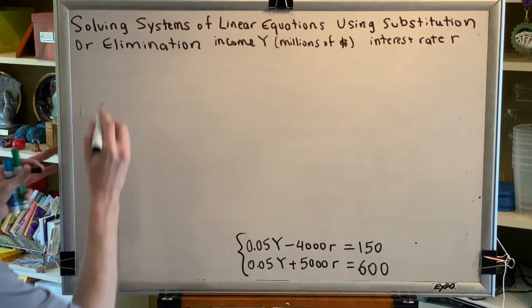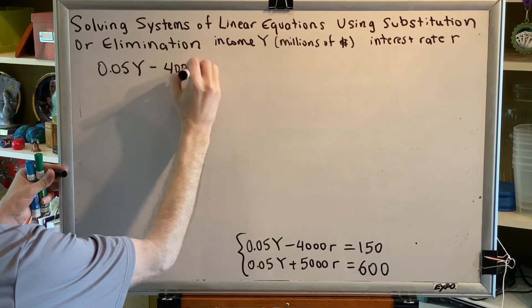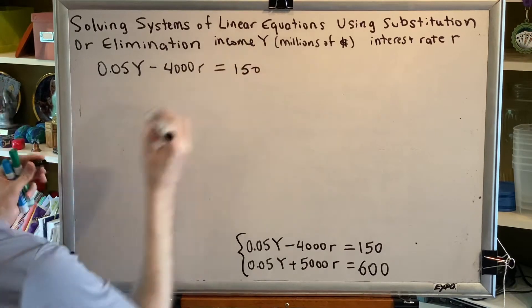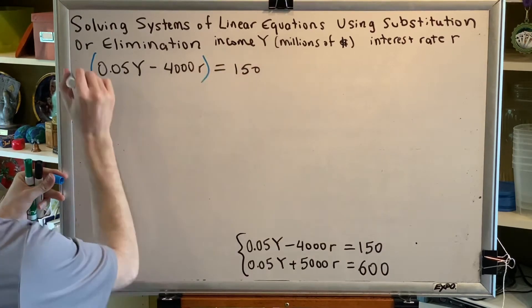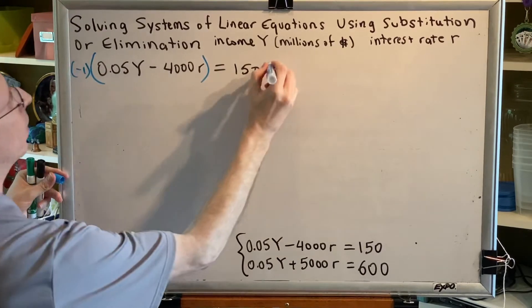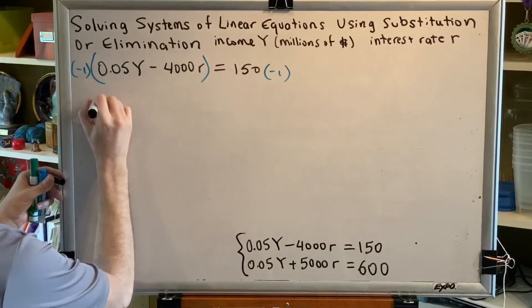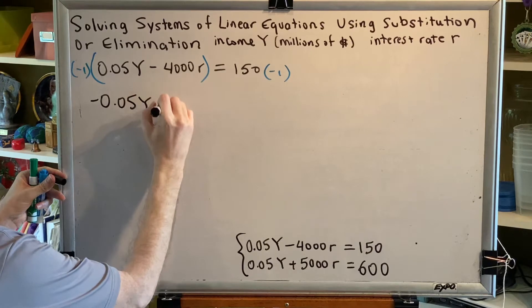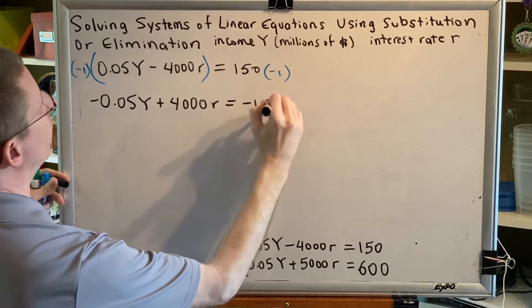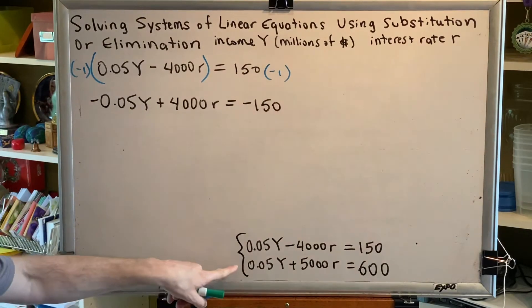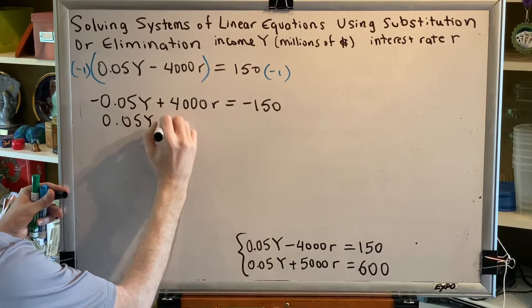So if we take the top equation, 0.05Y minus 4000R equals 150, and if we multiply it by negative one on both sides, we get negative 0.05Y plus 4000R equals negative 150. And then when we take our original second equation and put it underneath it, we'll see that we've created our opposites.